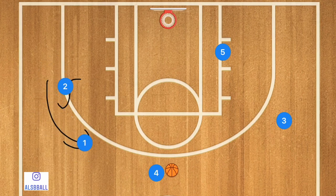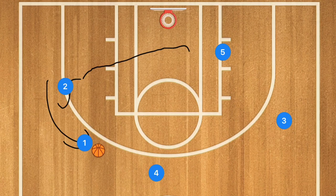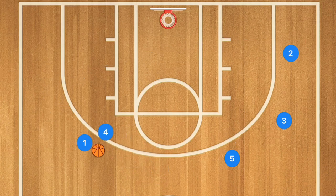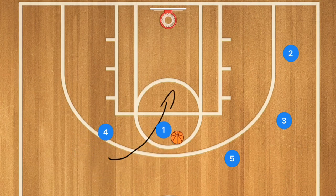Player one is going to use that screen and player four passes over to player one. Player two clears out towards the right side of the court, player five pops out towards the three-point line, and player four sets a screen for player one. Player one uses that screen, cuts towards the rim, and player four pops off — making this a screen and roll.